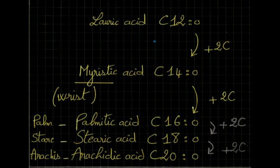Wrist gives us myristic acid C14, palm is for palmitic acid C16, stare for stearic C18, and peanut, also called arachidic acid, C20.